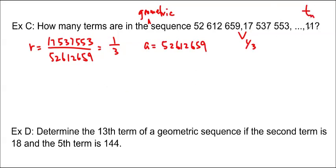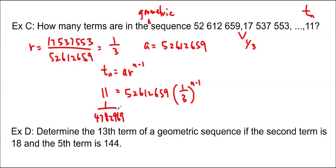So now I just have my T sub n, and my T sub n is 11. I'm going to use that to find my n. So T sub n equals A R to the n minus 1. And I know T sub n is 11, and I know A is 52,612,659, and R is 1 third to the n minus 1. So we would just solve this. It's an exponential equation. So 11 divided by 52,612,659 ends up being 1 over 4,782,969. And this is equal to 1 third to the n minus 1.